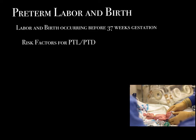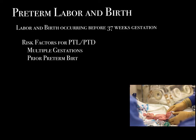Now let's talk about risk factors. Multiple gestations: each additional fetus over singleton pregnancy decreases the length of pregnancy by about three weeks. Higher-order multiples typically fall into the very preterm category. Prior preterm birth is probably the single biggest risk factor — if you've had one early baby, you're at risk for having another. If a mom says all her babies were early, you need to really target her for prevention of preterm delivery with the next baby.